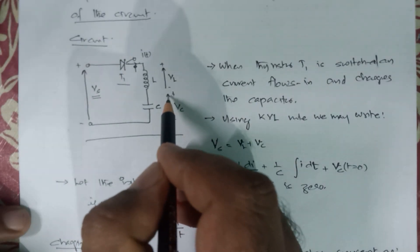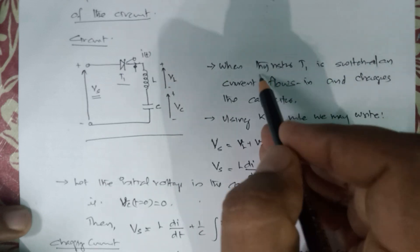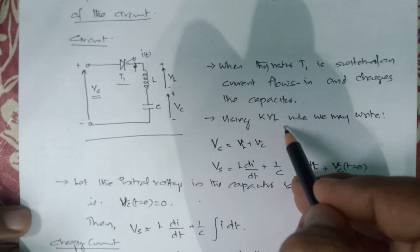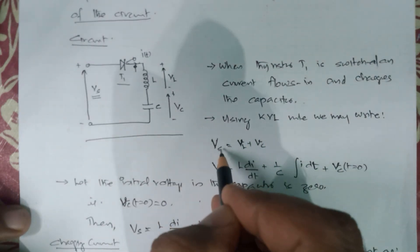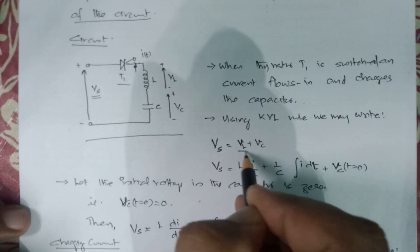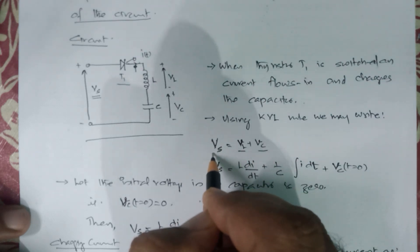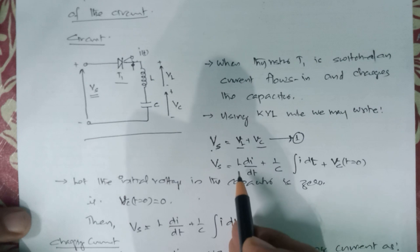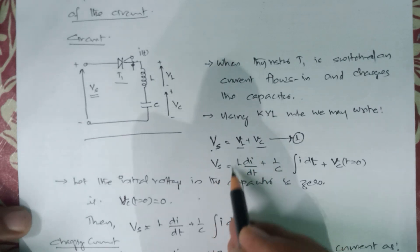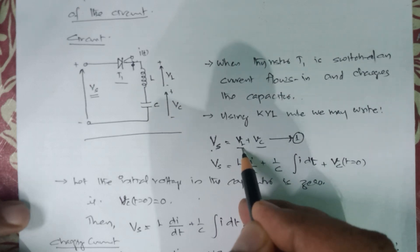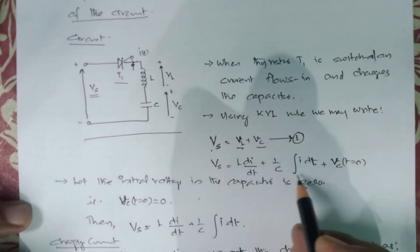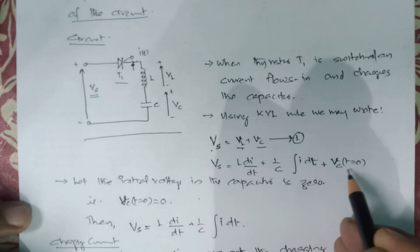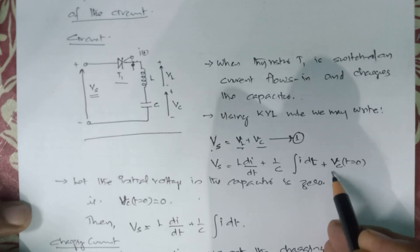The voltage across the capacitor rises in this fashion. When the thyristor T1 is switched on, current flows in and charges the capacitor. Using the KVL, we may write the capacitor voltage plus the inductor voltage will give the source voltage. So Vs equals VL plus Vc. We write this as equation 1: Vs equals L·di/dt, the inductor voltage, plus (1/C)∫i dt plus Vc at t=0, the initial voltage of the capacitor.